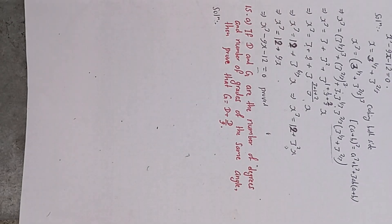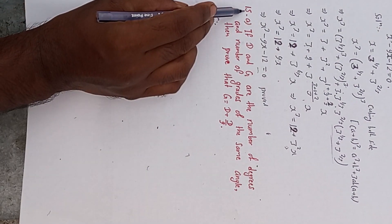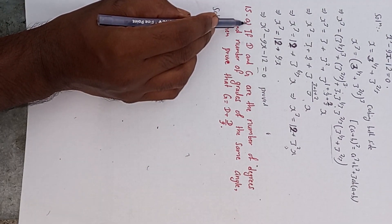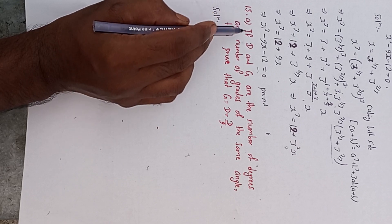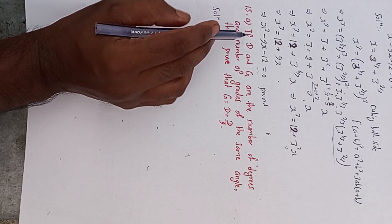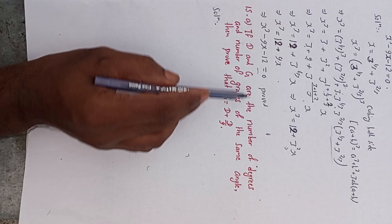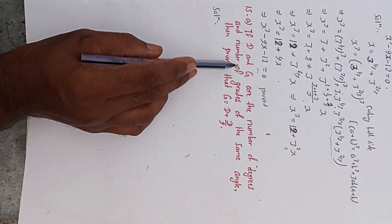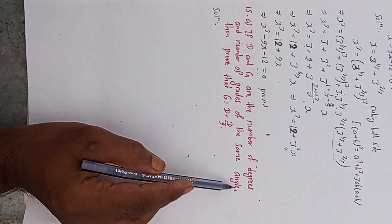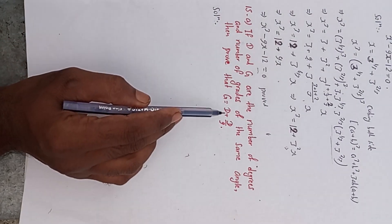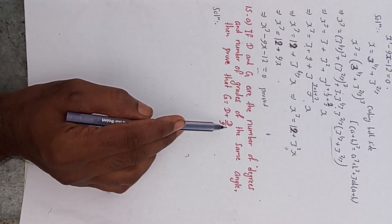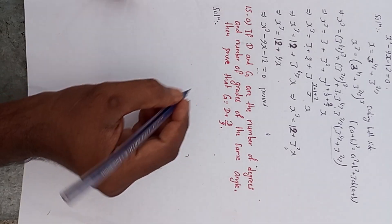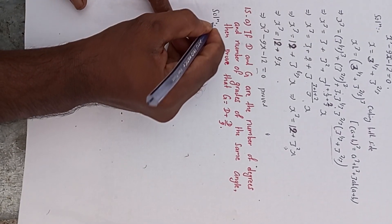Hi everybody, welcome back to Bimalsarji YouTube channel. Now I will solve question number 15(a) of Exercise 8.1: if d and g are the number of degrees and number of grades of the same angle, then prove that g is equal to d plus d by 9.